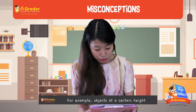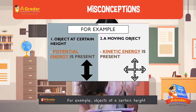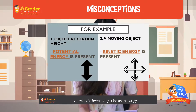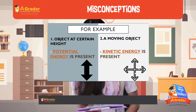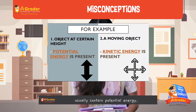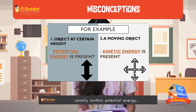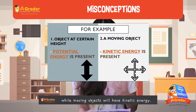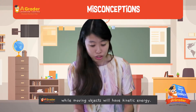For example, objects at a certain height or those that have stored energy usually contain potential energy, while moving objects will have kinetic energy.